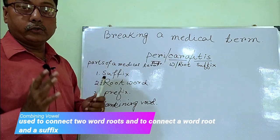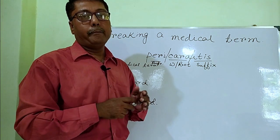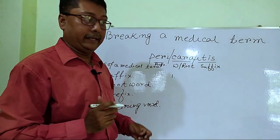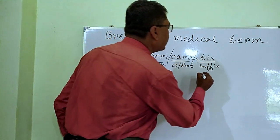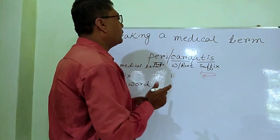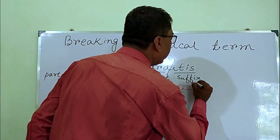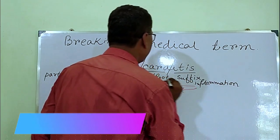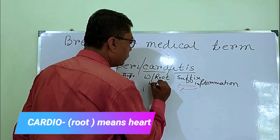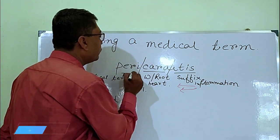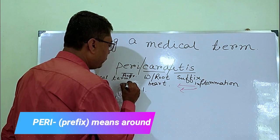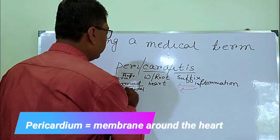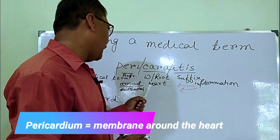Now let's look at the rules for breaking a medical term. Rule number one: start breaking from the suffix end. For example, '-itis' means inflammation, the word root 'cardi' means heart, and the prefix 'peri' means around or outside. So the term means inflammation of the outside of the heart — that is pericarditis.